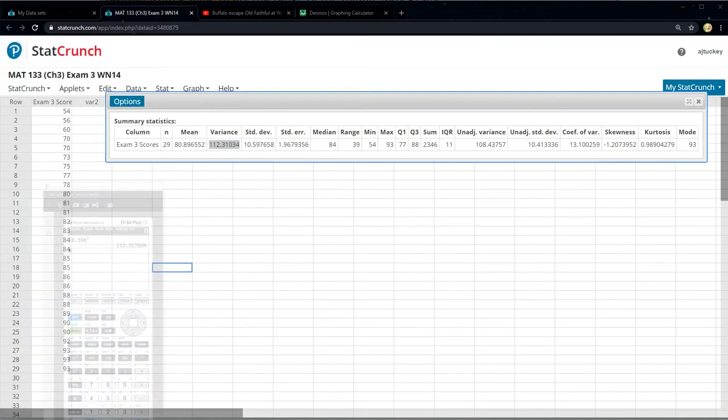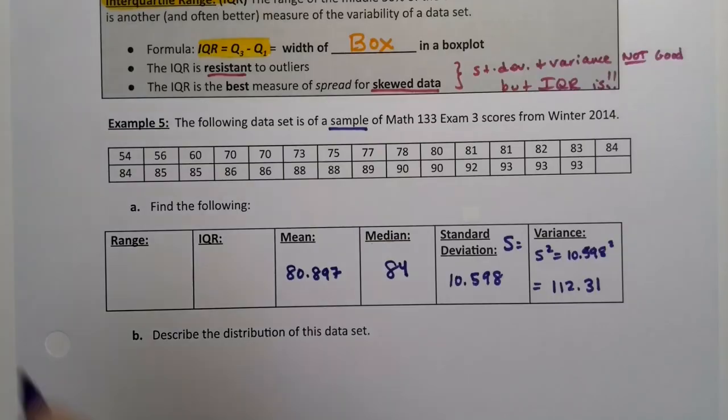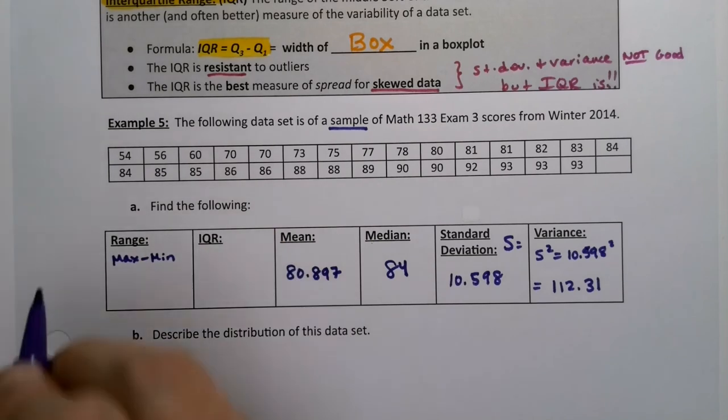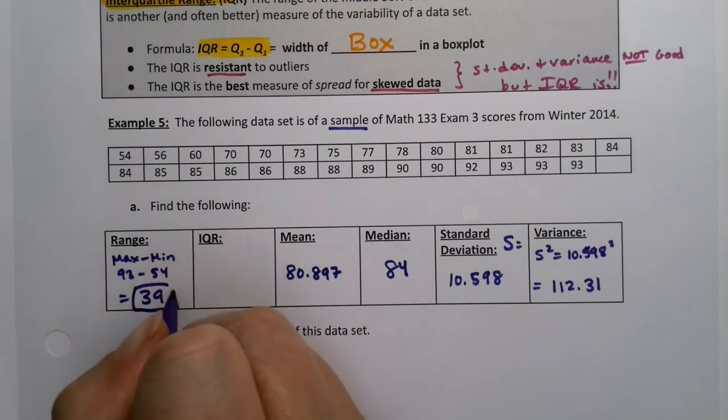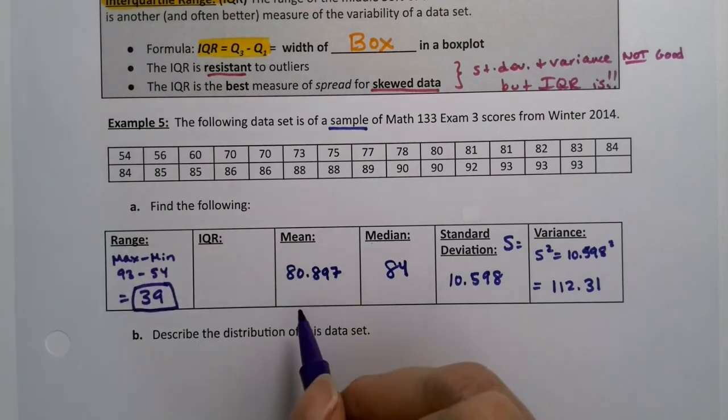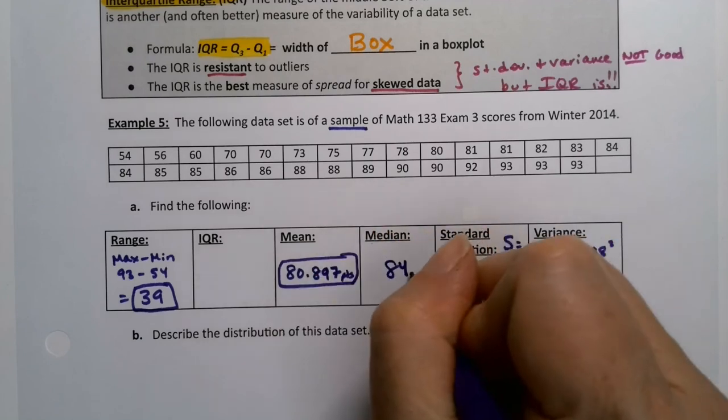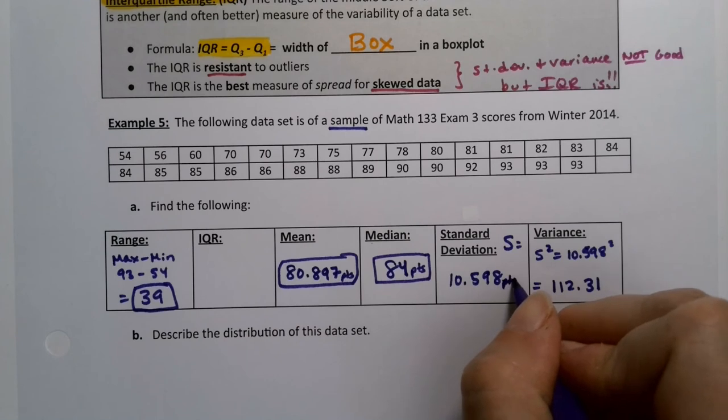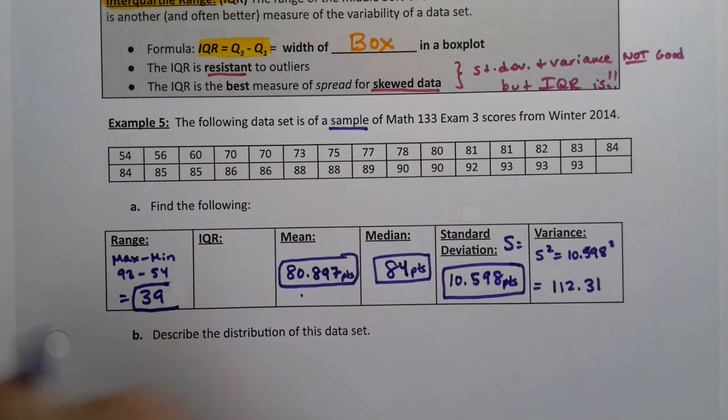Now the range and the IQR. The range is the max minus the min, just as a little review. So that'd be 93 take away 54, which is 39. And for the record, the unit for all of these ones is points because this is points on an exam. You could also maybe argue for percent. I'll use points.